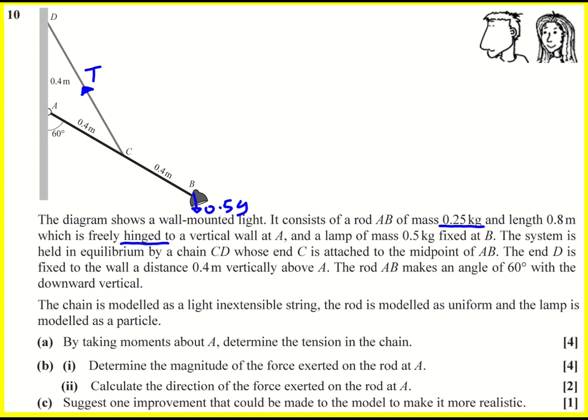Then what else do we have? The end D is fixed to a wall with a distance to 0.4 meters vertically above A. That's shown in my diagram and the rod AB makes an angle of 60 degrees with a downward vertical also shown. We're told to model the chain as a light and extensible string. The rod is modeled as uniform. So now I can bring in the weight. It's going to act exactly in the middle, 0.4 either side. So it's actually going to be 0.25G here. I've dealt with that.